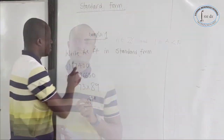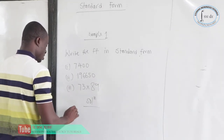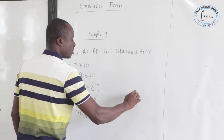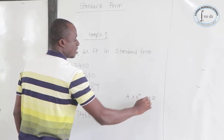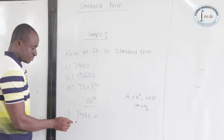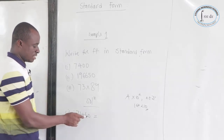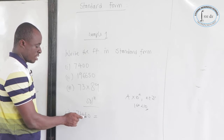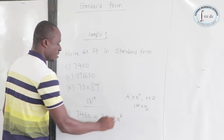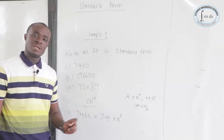Let's see an example. Write the following in standard form. The first one is 7,400. We know that to write it in standard form, it should be of the form A times 10 to the power N, where N is an integer and A is greater than or equal to 1 and less than 10. Since 7,400 is greater than 10, we move the point leftward — one, two, three steps. So this will be 7.4 times 10 to the power 3. The power is positive because we moved leftward.